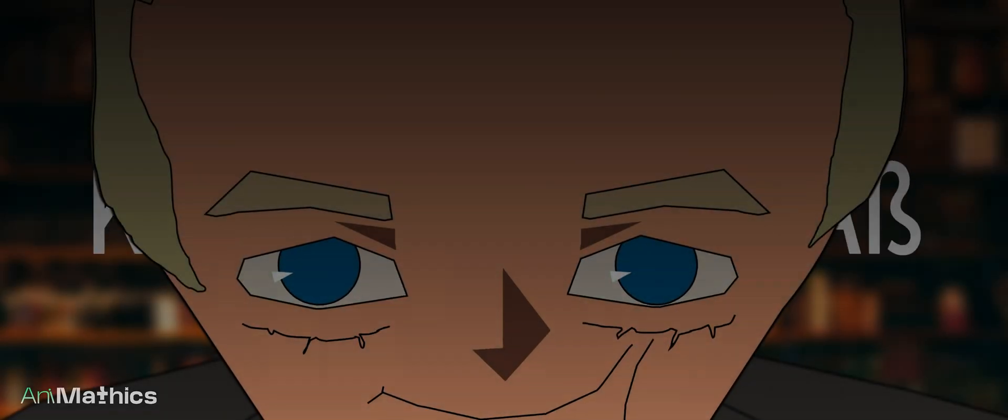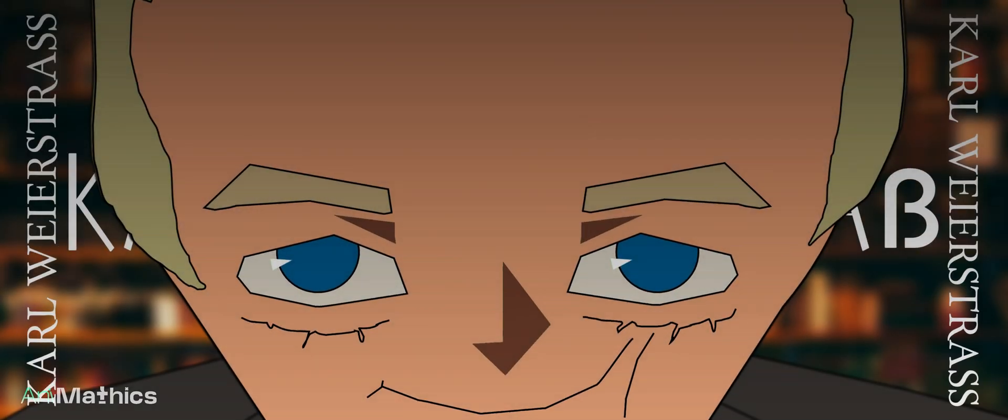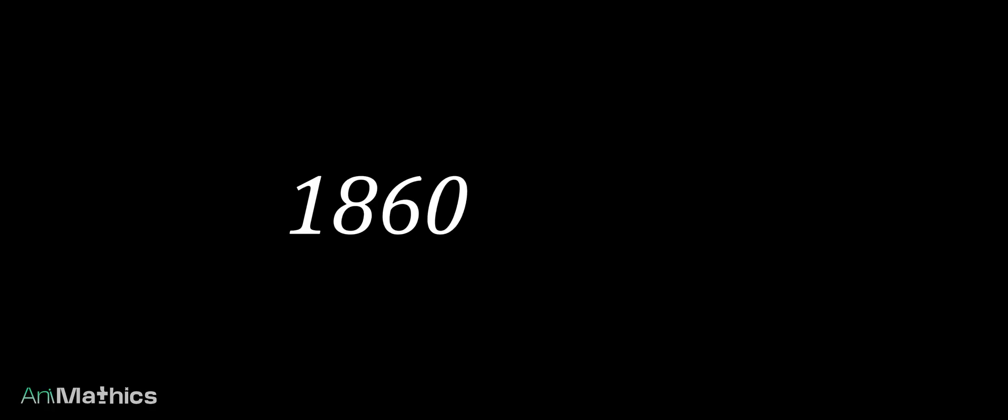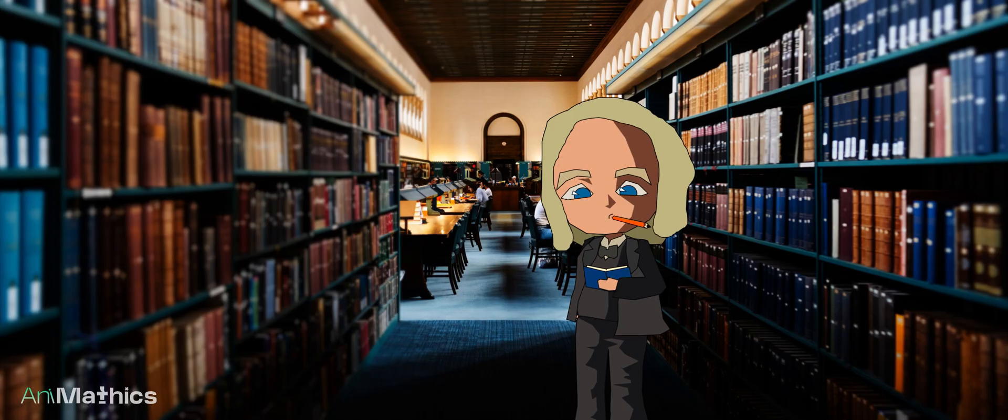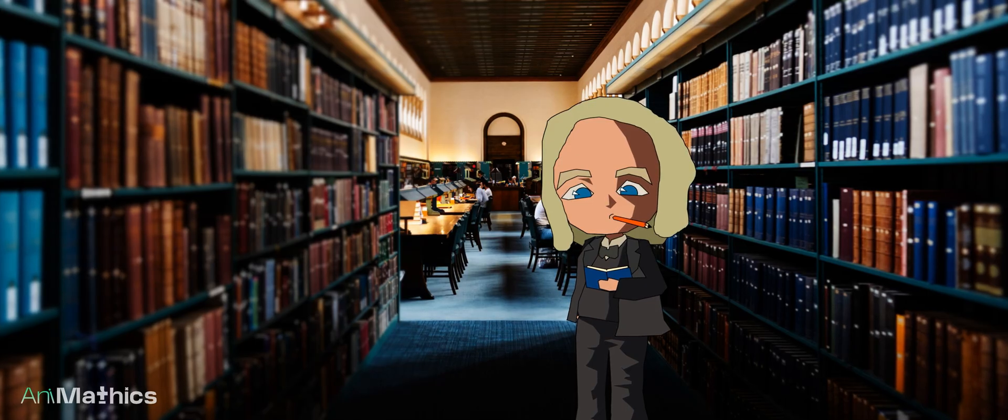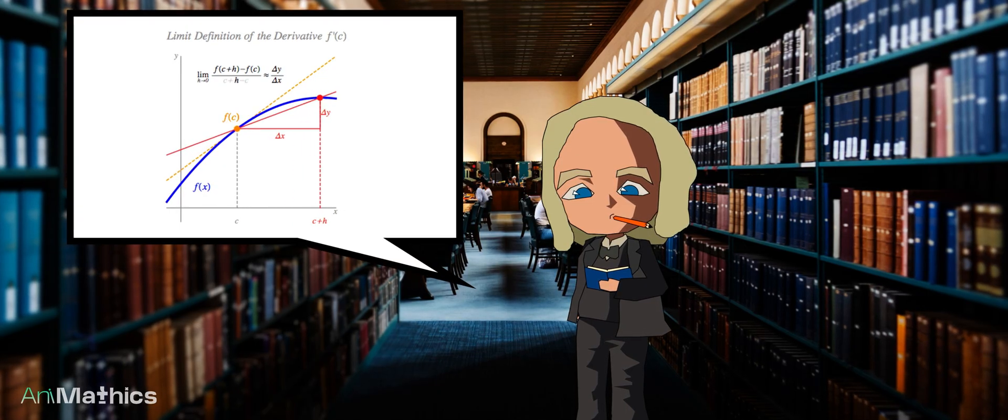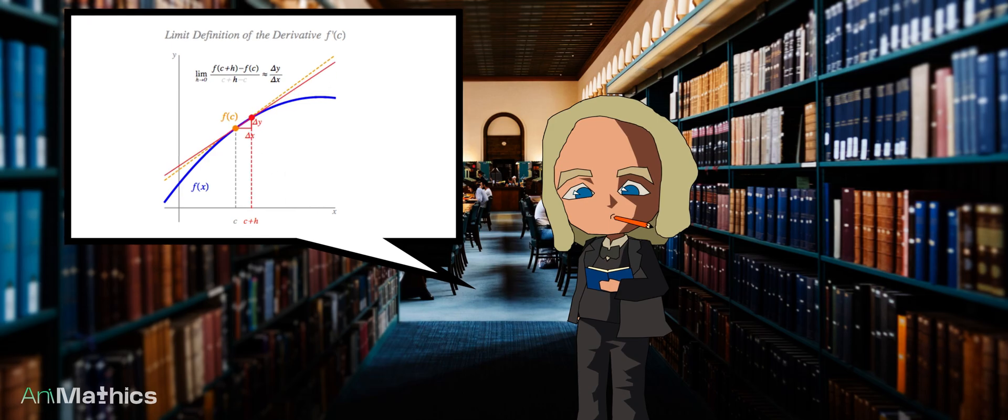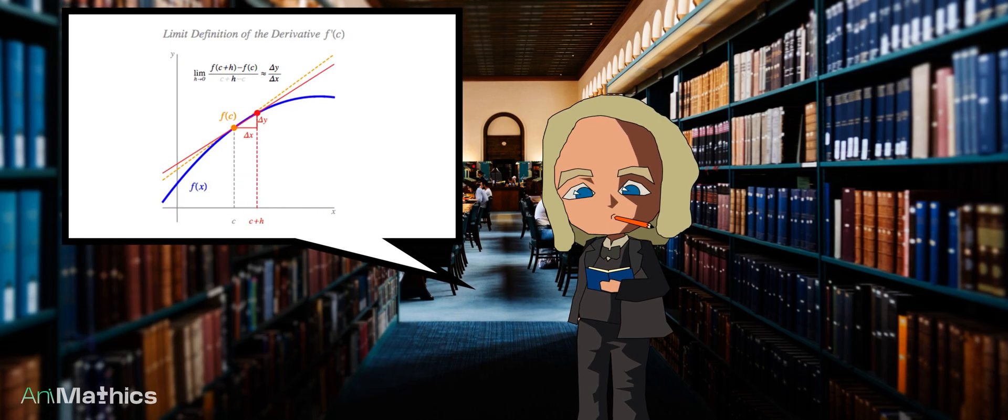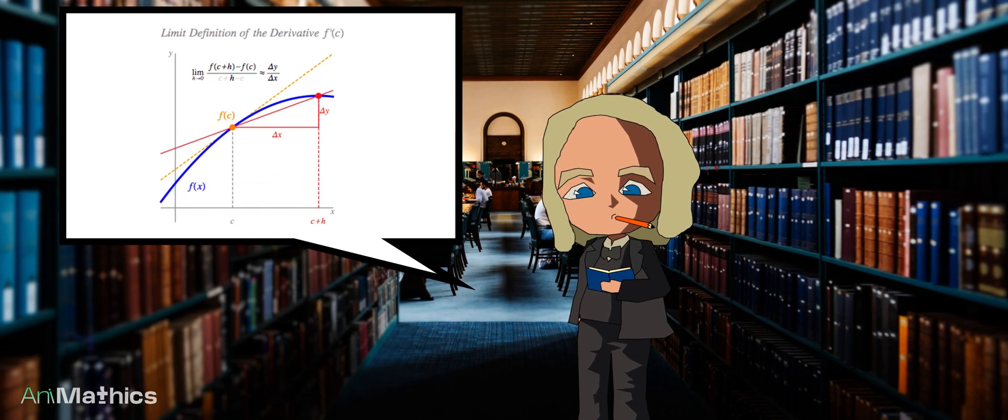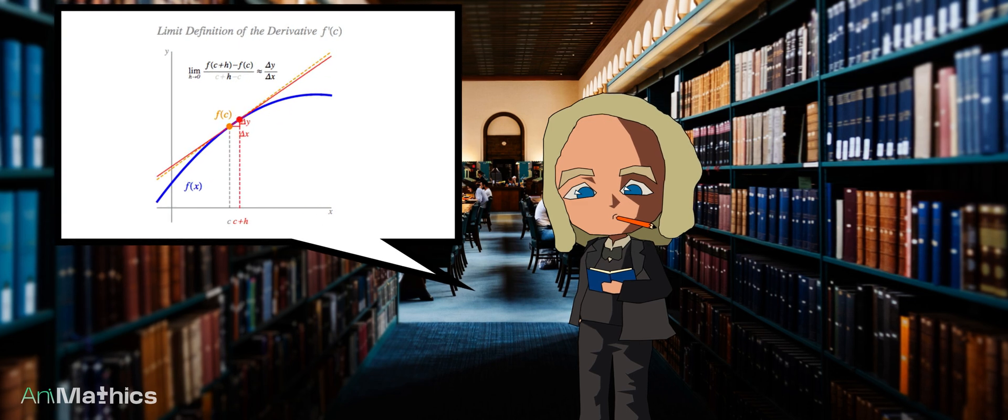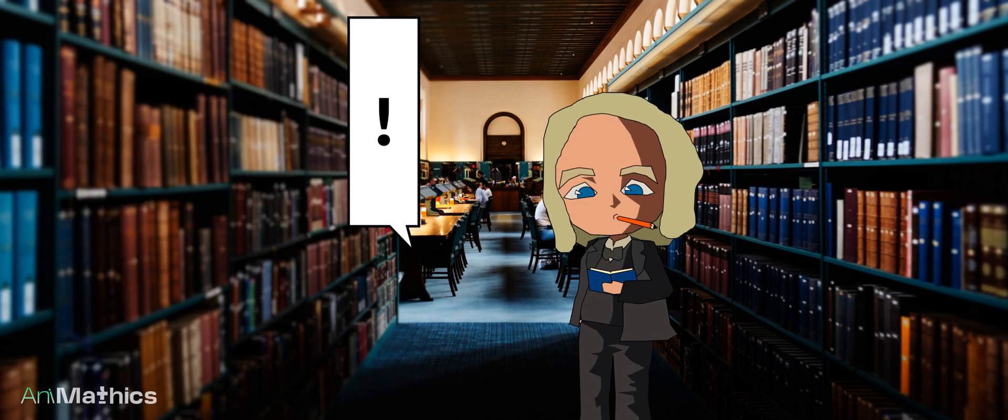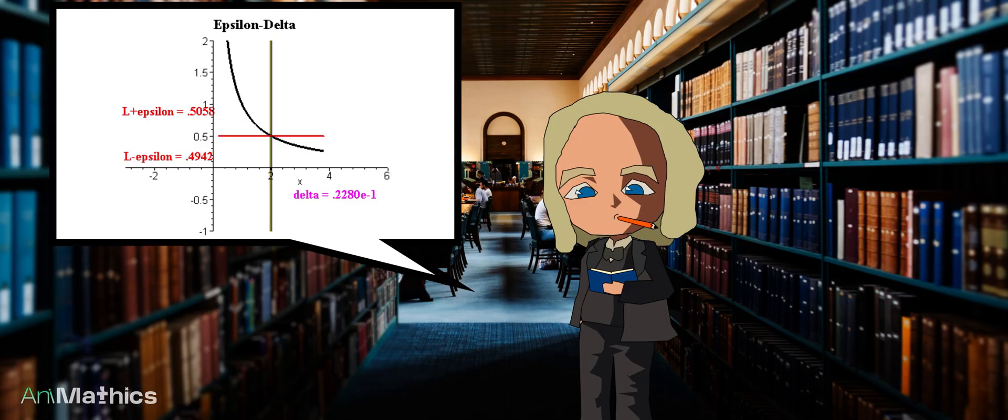That mathematician was none other than Carl Weierstrass. Between 1860 and 1870, Weierstrass studied Bolzano's work and was deeply influenced by it. At this point, Weierstrass was especially interested in the idea that mathematics should not rely on geometric intuition, but instead be grounded in purely arithmetic definitions. From this line of thought, the epsilon-delta method was born.